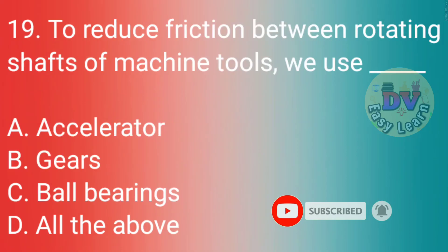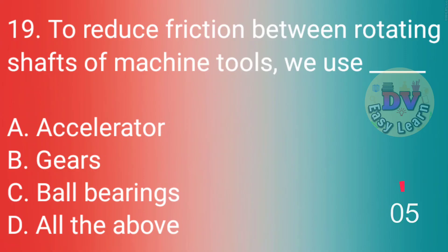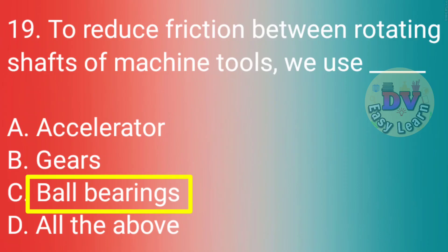Q19. To reduce friction between rotating shafts of machine tools, we use? Correct answer: Ball bearings.